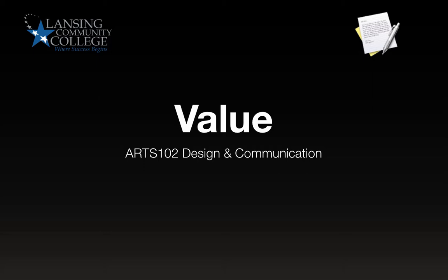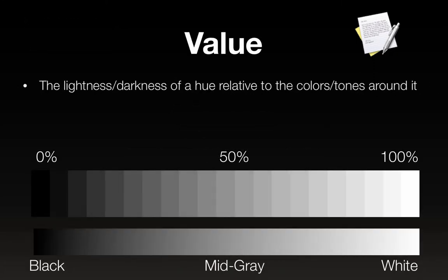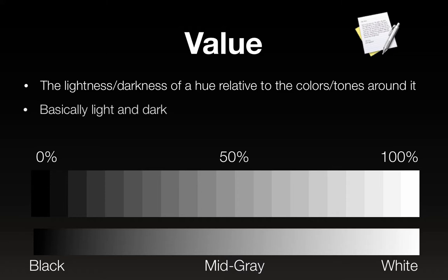Hello Arts 102 and welcome to the value unit. This is not values like family values — this is talking about darkness and lightness. Basically, that's what value is: just dark and light. The value of a hue is the lightness or darkness of a hue relative to the colors or tones around it.